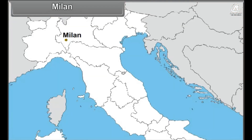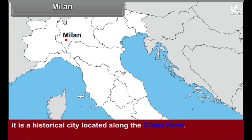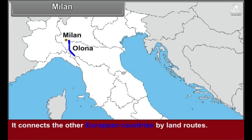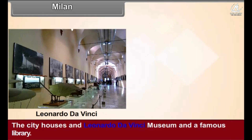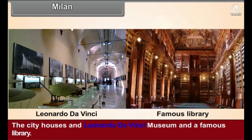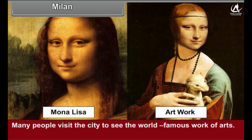Milan: Milan is a historical city located along the Olona River. It connects to other European countries by land routes. The city houses the Leonardo da Vinci museum and a famous library. Many people visit the city to see its world-famous works of art.